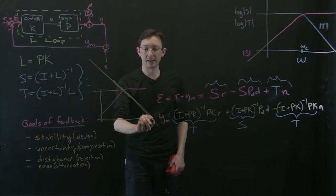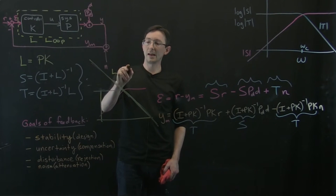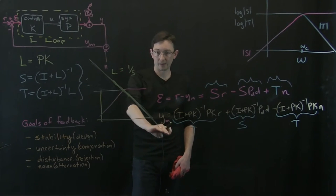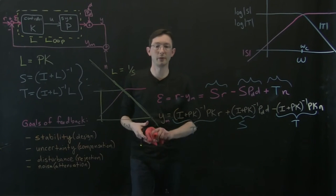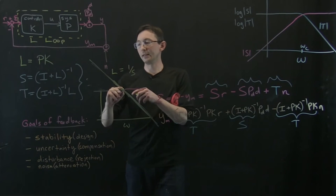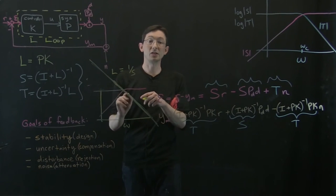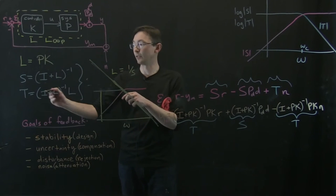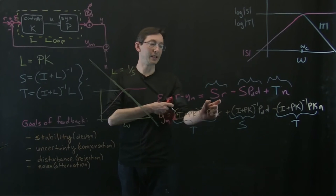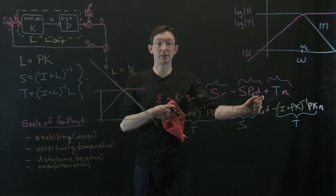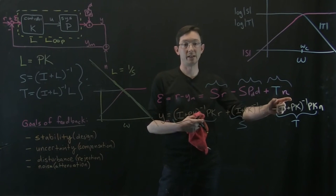And so what you see is that I essentially get this shape where L looks like an integrator, 1 over S. It just looks like an integrator in the frequency domain. Remember, this is my Bode plot as a function of omega. And if L is big at low frequencies, I get good sensitivity. If L is small at high frequencies, I get good complementary sensitivity. So big L at low frequencies means I have good reference tracking and disturbance rejection. Small L at high frequencies means I have good noise attenuation.